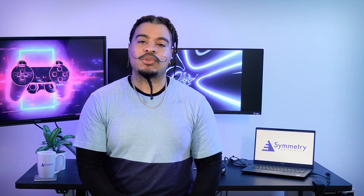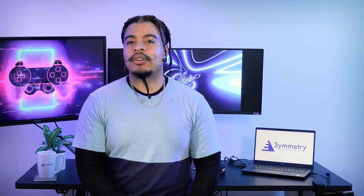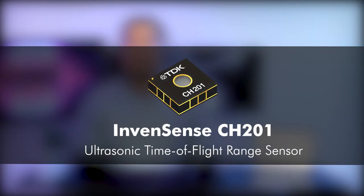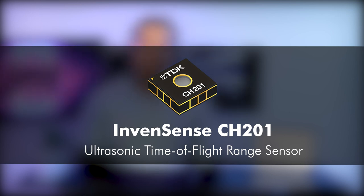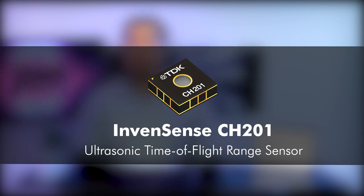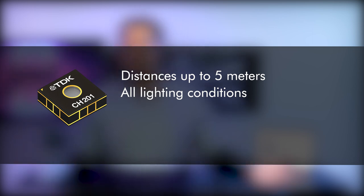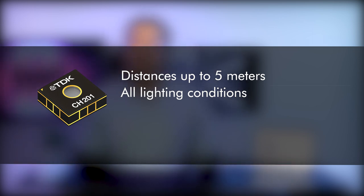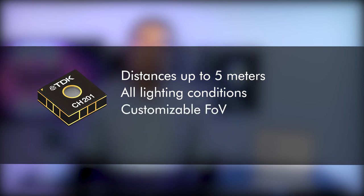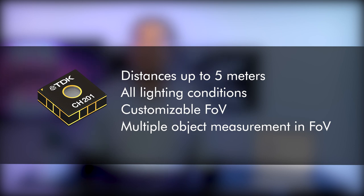When it comes to an ultrasonic sensor, look no further than the InvenSense CH-201 series. The CH-201 is a time-of-flight range sensor capable of accurate range measurements at distances up to 5 meters and works in all lighting conditions from full sunlight to pitch black darkness. The CH-201 also features a customizable field of view, including simultaneous range measurements for multiple objects in its field of view. It's an ideal option for range finding, presence and proximity sensing, object detection, and position tracking.